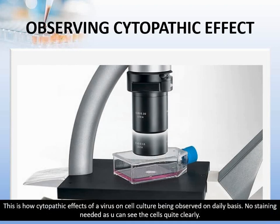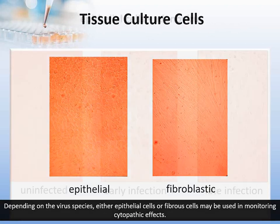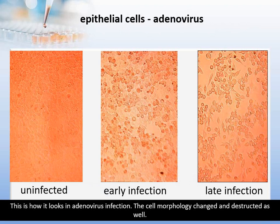This is how cytopathic effects of a virus on cell culture are observed on a daily basis. No staining is needed as you can see the cells quite clearly. Depending on the virus species, either epithelial cells or fibrous cells may be used in monitoring cytopathic effects. This is how it looks in adenovirus infection — the cell morphology changes and becomes destructed.